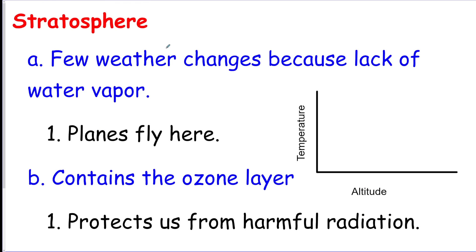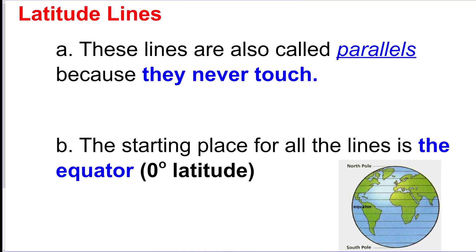We got the stratosphere. There's not that much weather changes here because there's not that much water vapor, and it contains the ozone layer which absorbs heat. It also protects us from harmful UV radiation, so that's a very important thing to know here. So temperature actually is going to go up in the stratosphere as you go up.